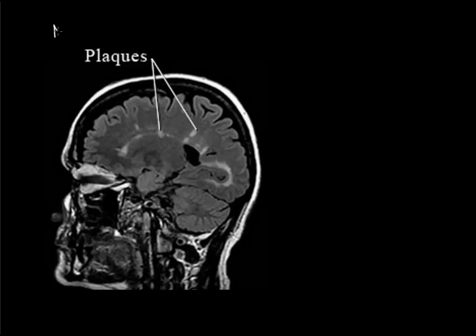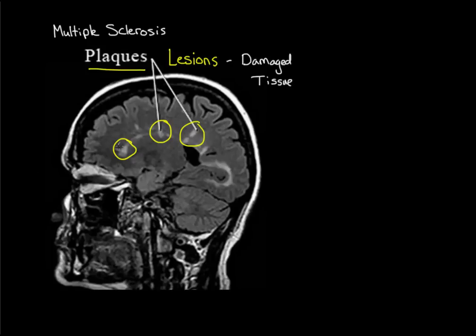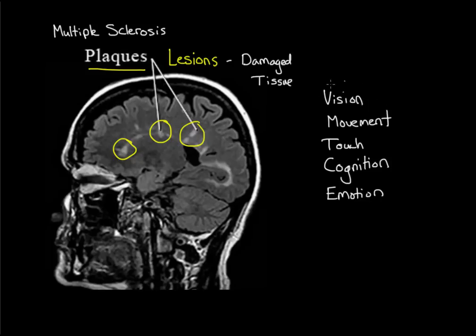Here we have the brain of someone suffering from multiple sclerosis. You'll notice these bright spots located throughout the brain, known as plaques. These plaques are also referred to as lesions, which are really just pieces of damaged tissue. Note how these plaques are forming in different parts of the brain. The really important thing to keep in mind is that different parts of the brain are responsible for different functions. Some parts may be involved in vision, movement, touch, cognition, and even emotion. So you can get a dysfunction in each of these categories depending on where the lesion forms.